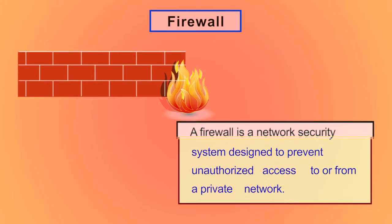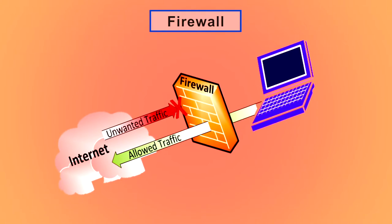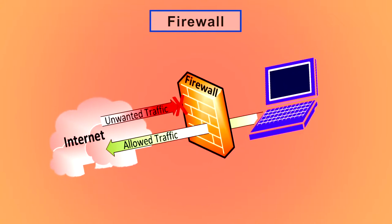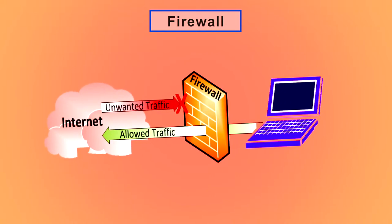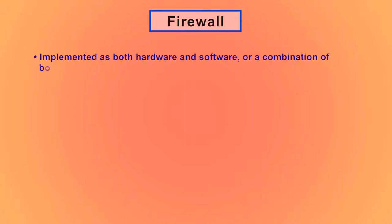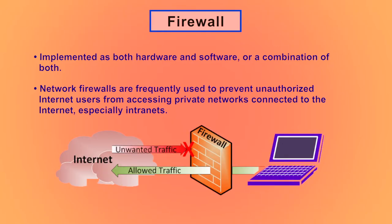A firewall is a network security system designed to prevent unauthorized access to or from a private network. A firewall is a system that provides network security by filtering incoming and outgoing network traffic based on a set of user-defined rules. In general, the purpose of a firewall is to reduce or eliminate the occurrence of unwanted network communications while allowing all legitimate communications to flow freely. Firewalls can be implemented as both hardware and software or a combination of both. All messages entering or leaving the intranet pass through the firewall, which examines each message and blocks those that do not meet the specific security criteria.